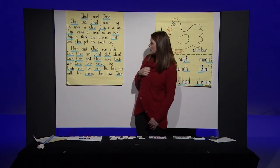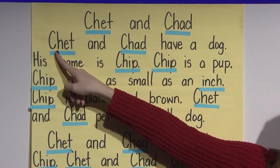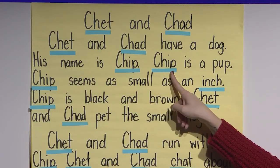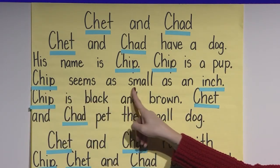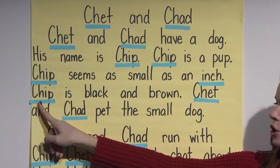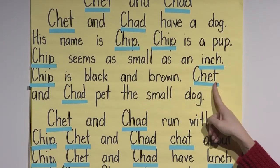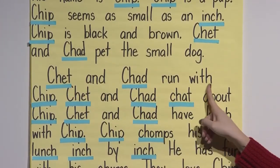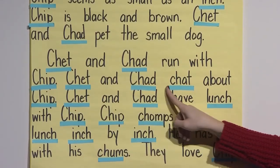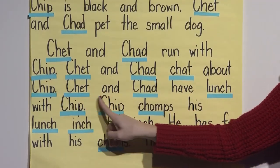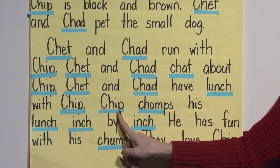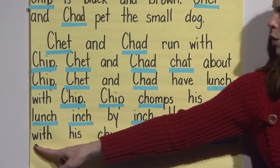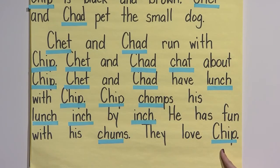Now let's go through and read the whole story together again. Chet and Chad. Chet and Chad have a dog. His name is Chip. Chip is a pup. Chip seems as small as an inch. Chip is black and brown. Chet and Chad pet the small dog. Chet and Chad run with Chip. Chet and Chad chat about Chip. Chet and Chad have lunch with Chip. Chip chomps his lunch inch by inch. He has fun with his chums. They love Chip.